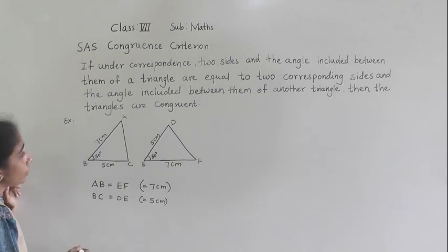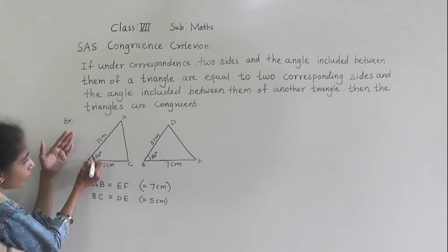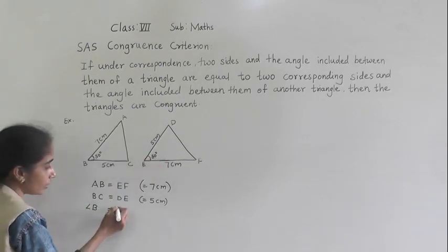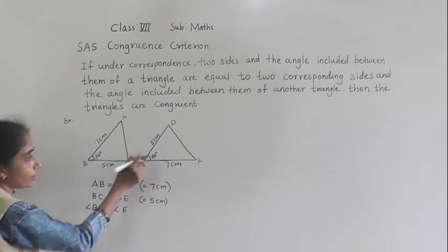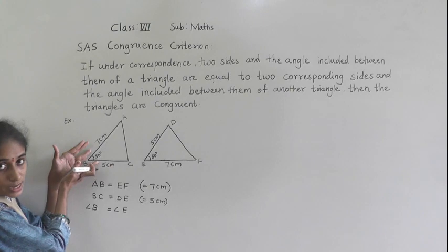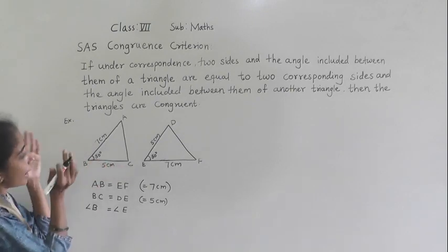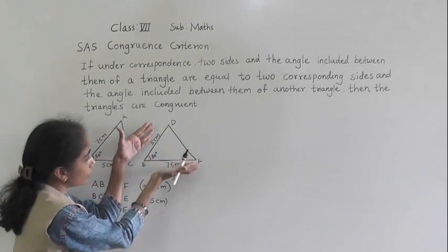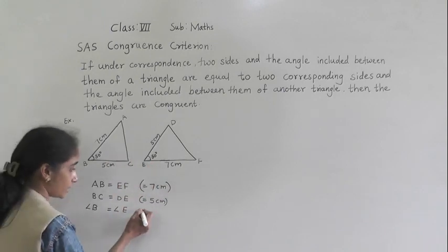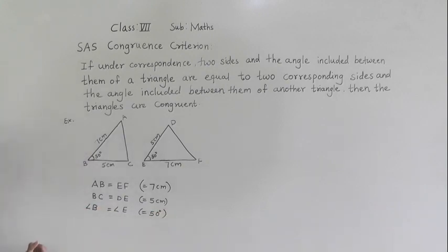Now we just include an angle. In both these sides, B is the included angle. So angle B is equal to angle E. Angle B is the included angle between these two sides, and angle E is the included angle between those two sides. Each of them has the same measurement: 50 degrees. So angle B is equal to angle E, equal to 50 degrees. These angles are also equal.